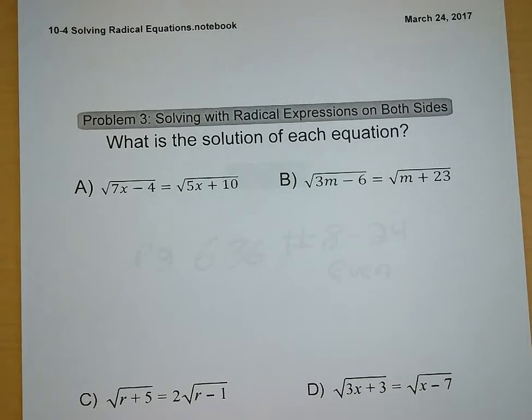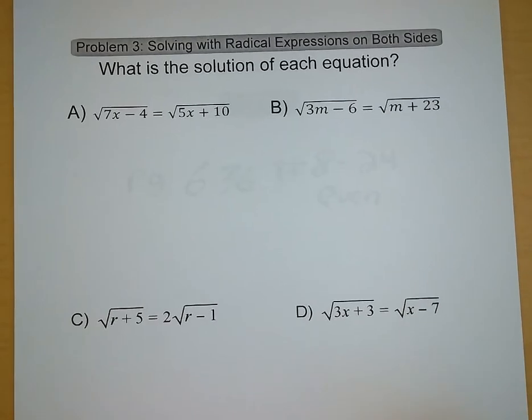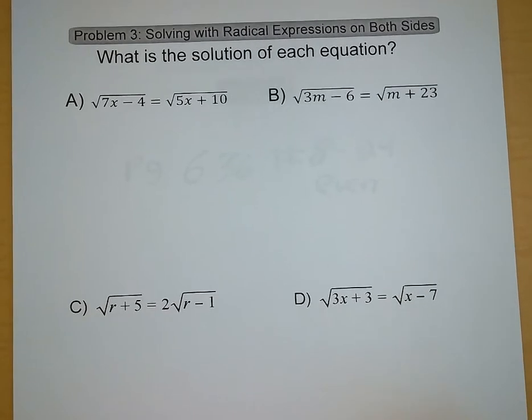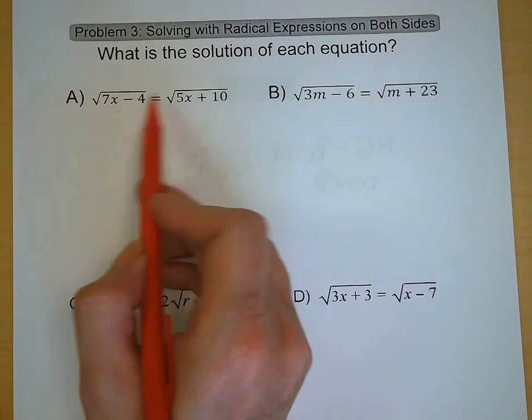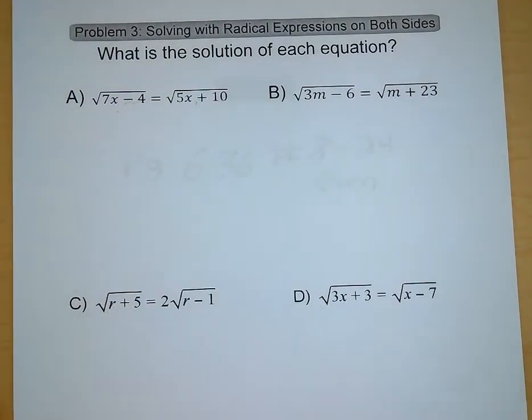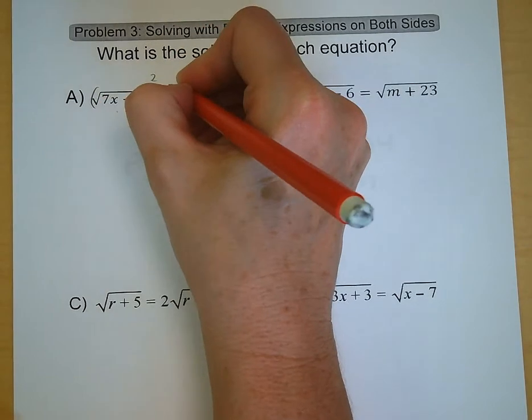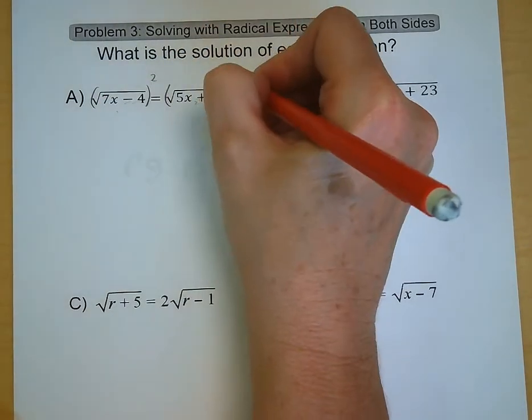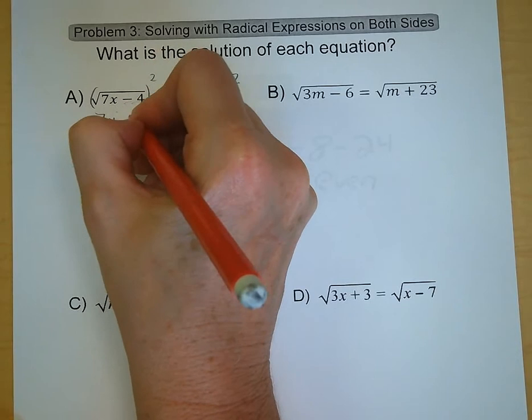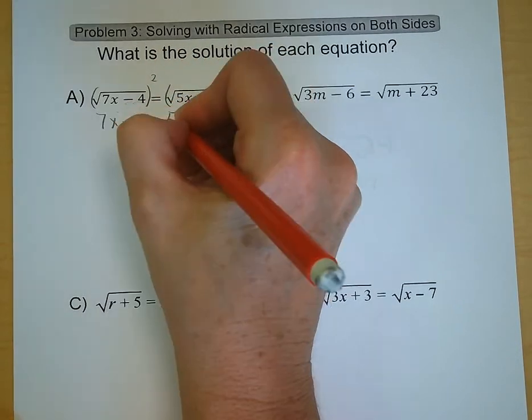Problem 3. Solving with radical expressions on both sides. So the first thing we need to do for these is square both sides of the equation and that's going to take care of all those messy radicals. And we are left with 7x minus 4 is equal to 5x plus 10.